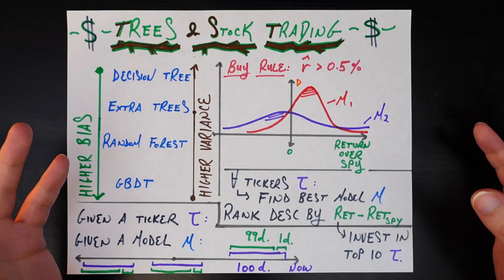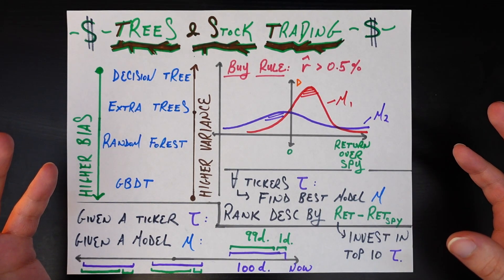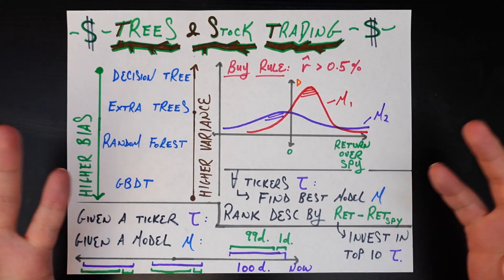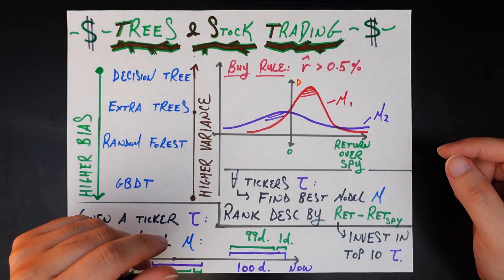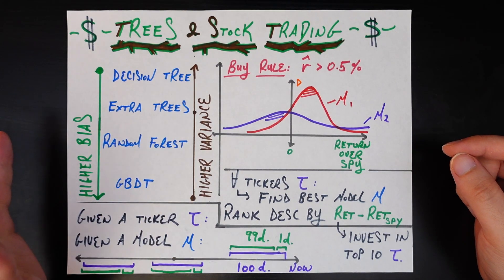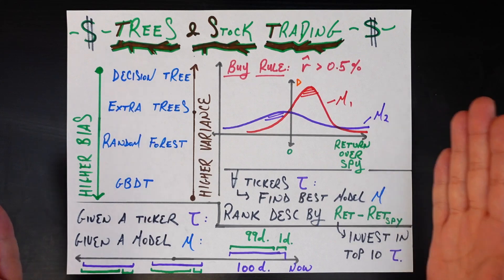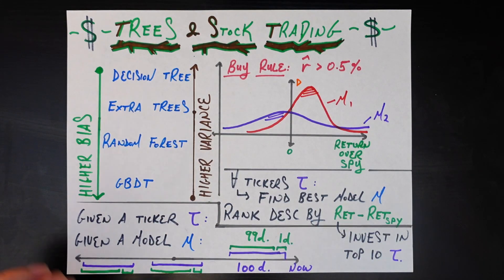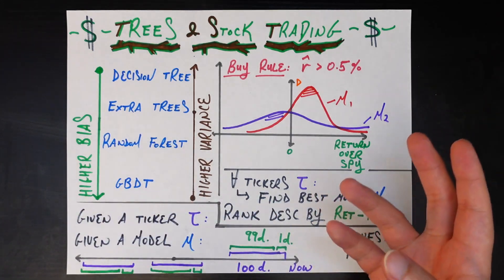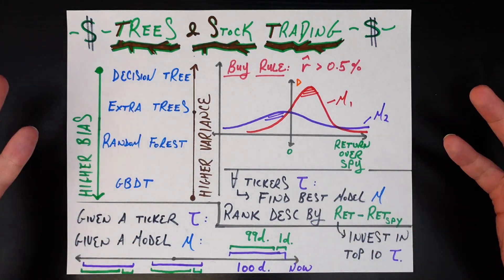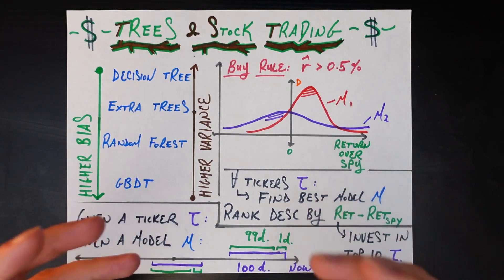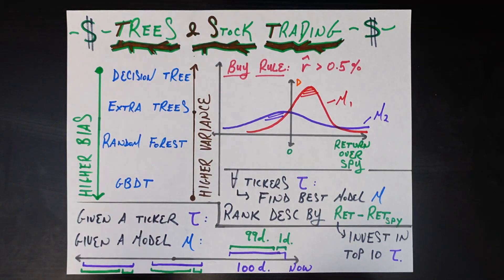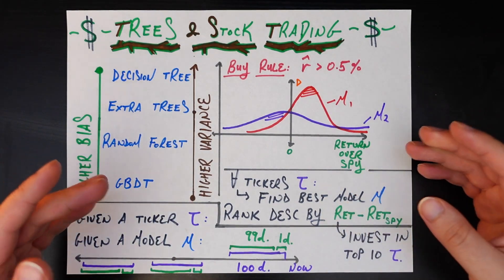That same architecture can also be the strength of this model, because people in the real world make many decisions based on splits. For example, I might say: if Microsoft stock goes up by 1% today, then I'm going to buy it tomorrow. A lot of people have these thresholds in mind — above which they'll buy, below which they won't. If that is truly how the world operates and enough traders think that way, then it may be exactly tree-based models that pick up on those nuances.